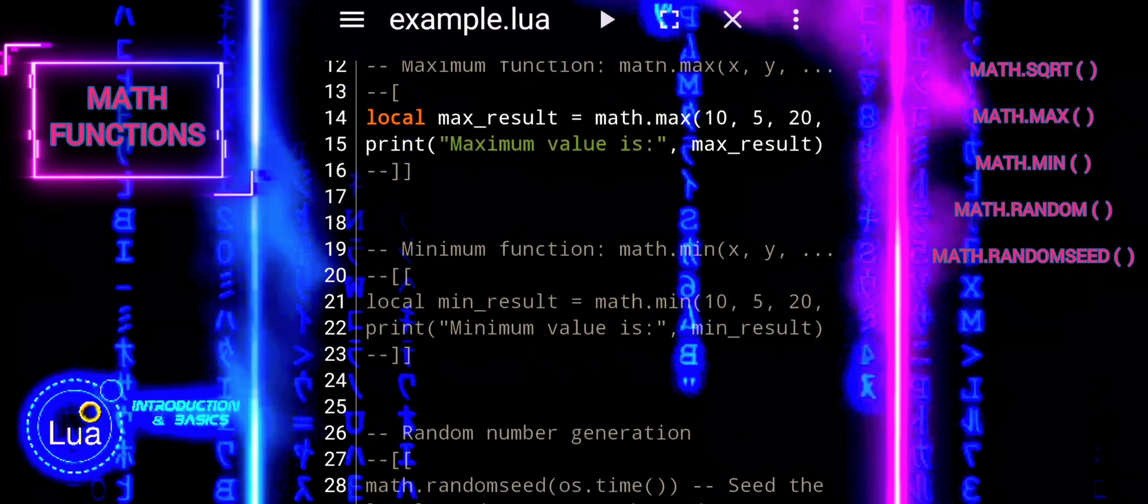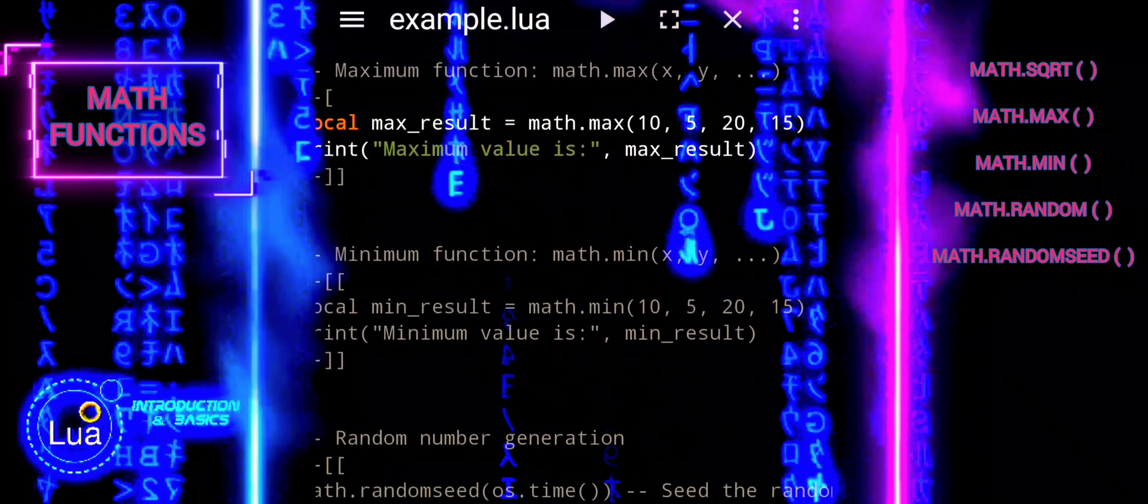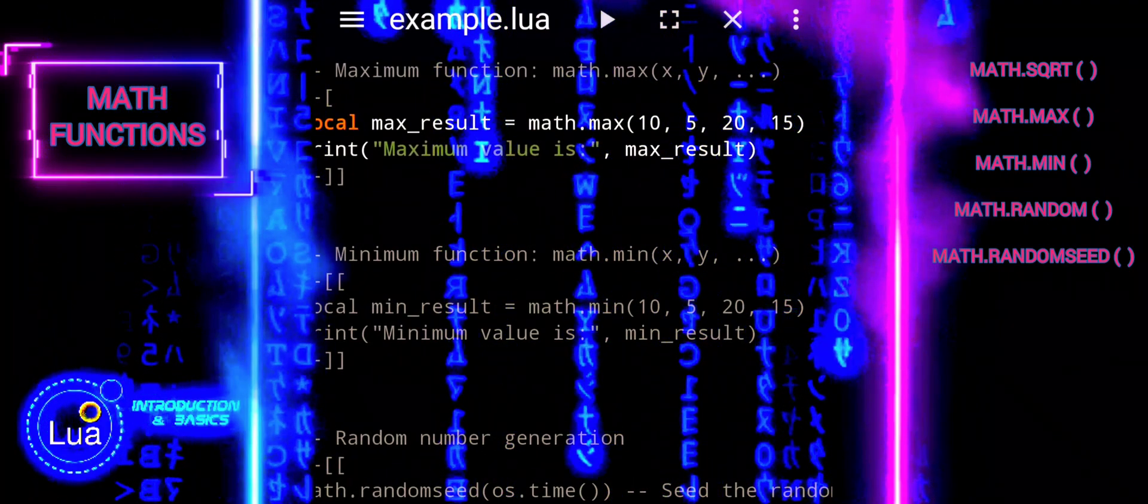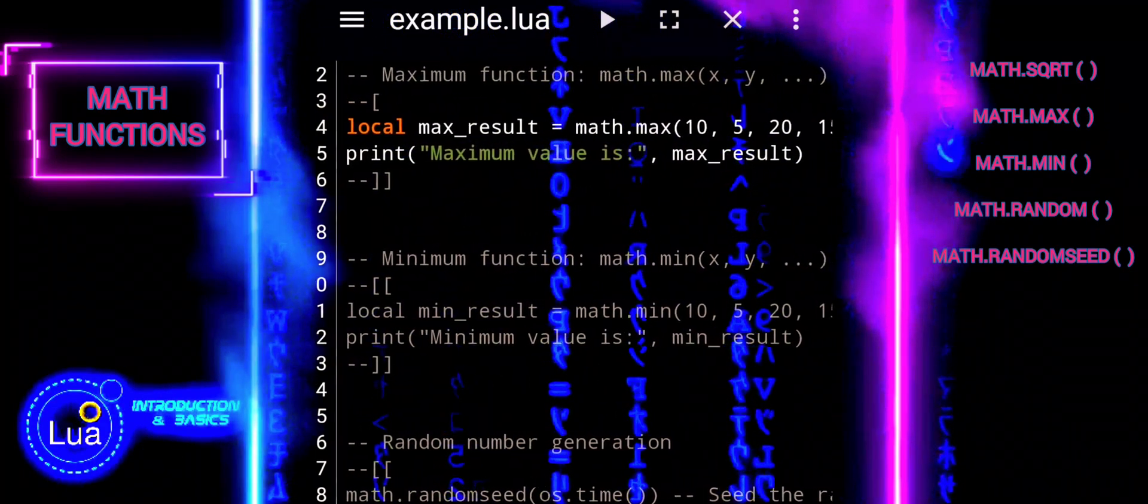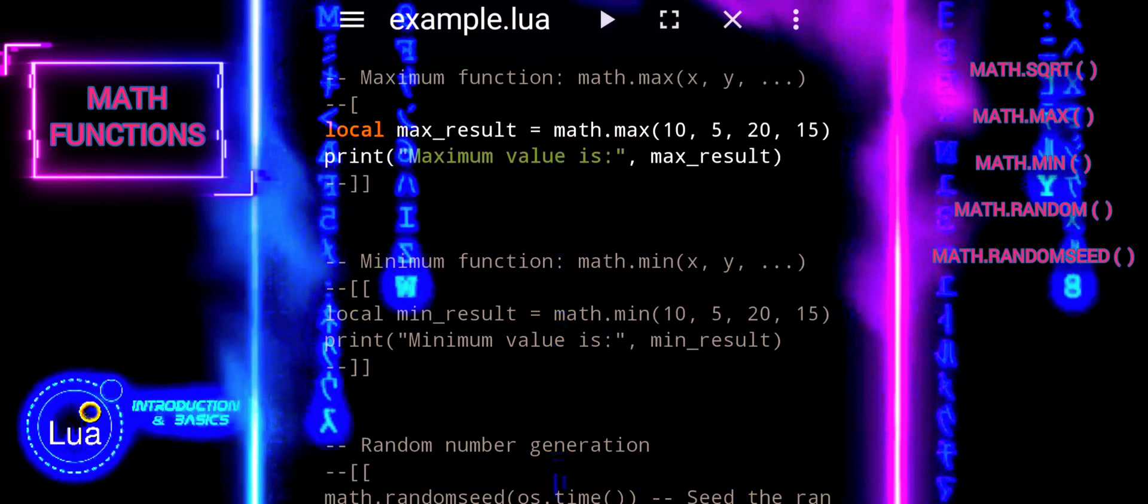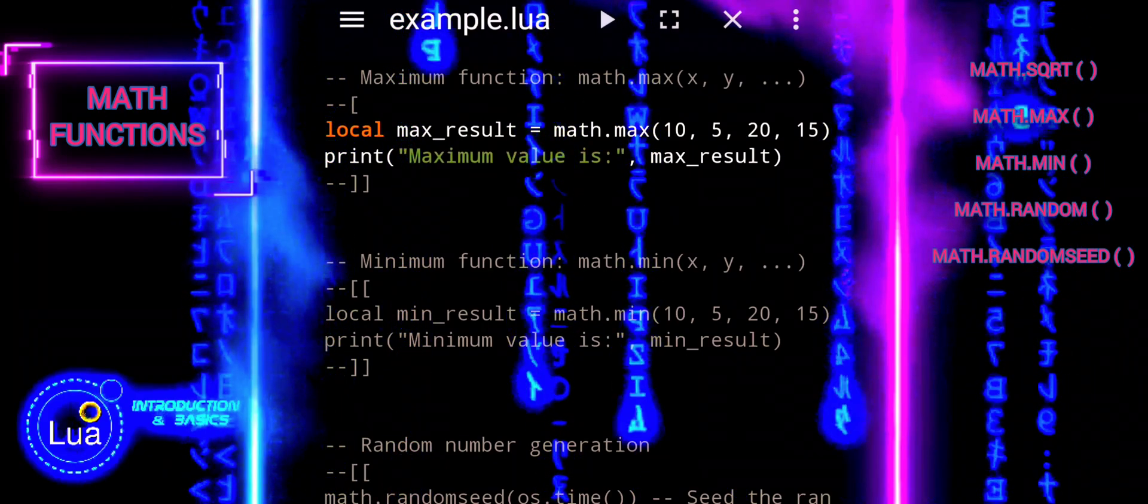The math.max function is commonly used in scenarios where you need to find the largest value among a group of numbers. It's useful in various applications, such as finding the highest score in a game, determining the maximum temperature in weather data, or identifying the largest quantity in a data set.